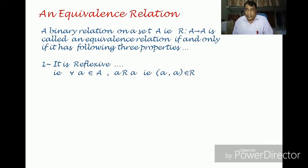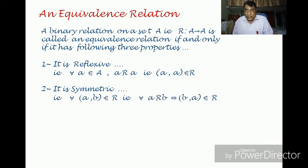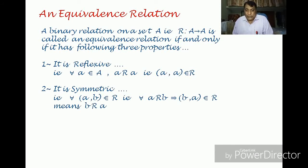Secondly, it is symmetric. For being symmetric, what does it mean? It means for every ordered pair (a, b) belonging to R — that is, for every a related to b — it implies b is related to a. That is, ordered pair (a, b) belongs to R implies ordered pair (b, a) also belongs to R. Then the relation will be symmetric.